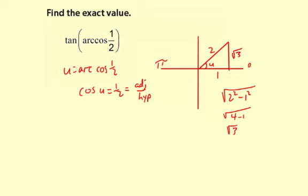Now since u is the arc cosine of one half, really what we're trying to find is the tangent of u. And we can do that based off this right triangle, because the tangent is opposite side over adjacent side.